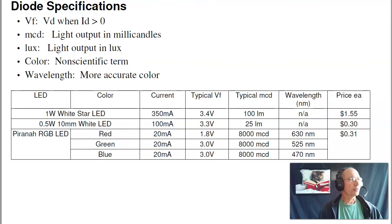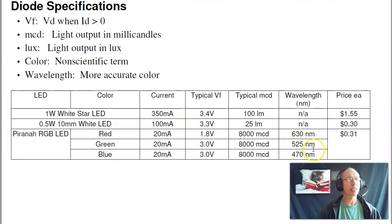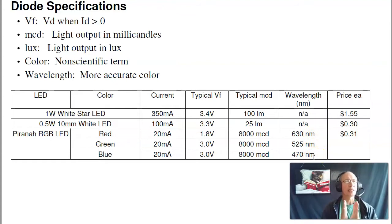Diodes are typically specified like this: you have the LED, the color, the current, typical VF, and typical millicandles. The color is a non-scientific term — red, green, blue LED. The wavelength is actually much more accurate and a more precise way of defining color. LEDs have very narrow bandwidth; when it says 630 nanometers, it's probably something like 625 to 635 — a very narrow window.